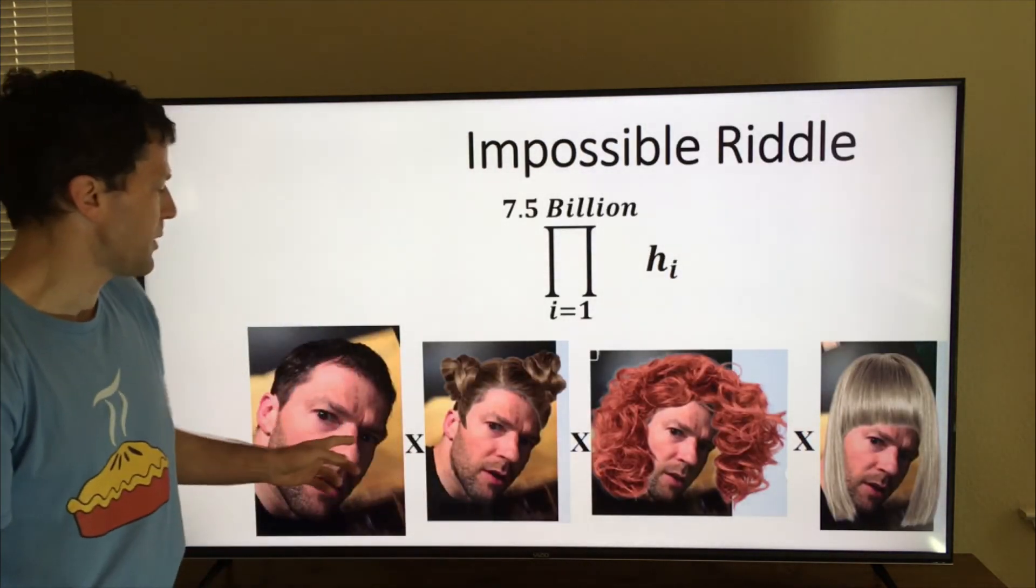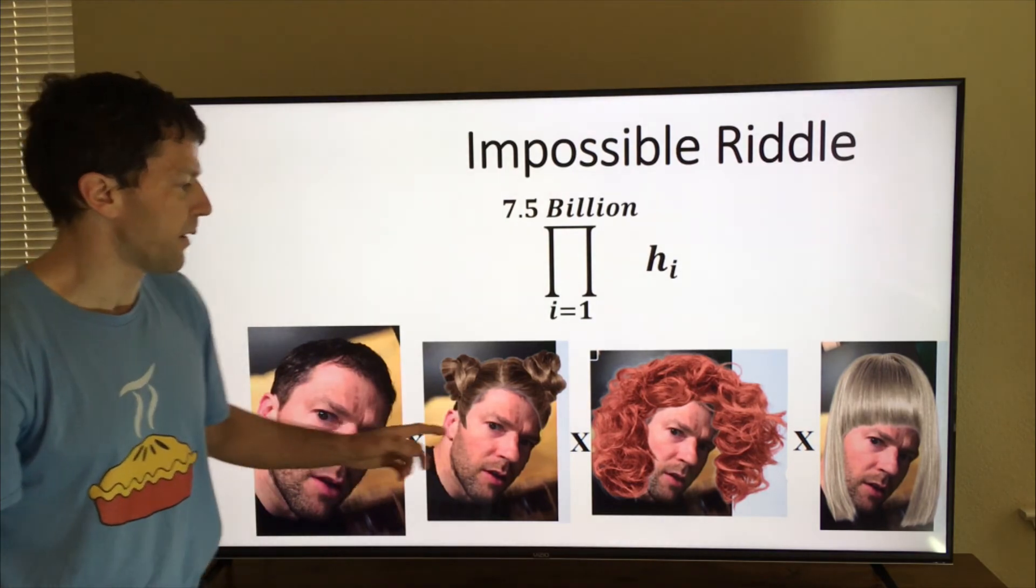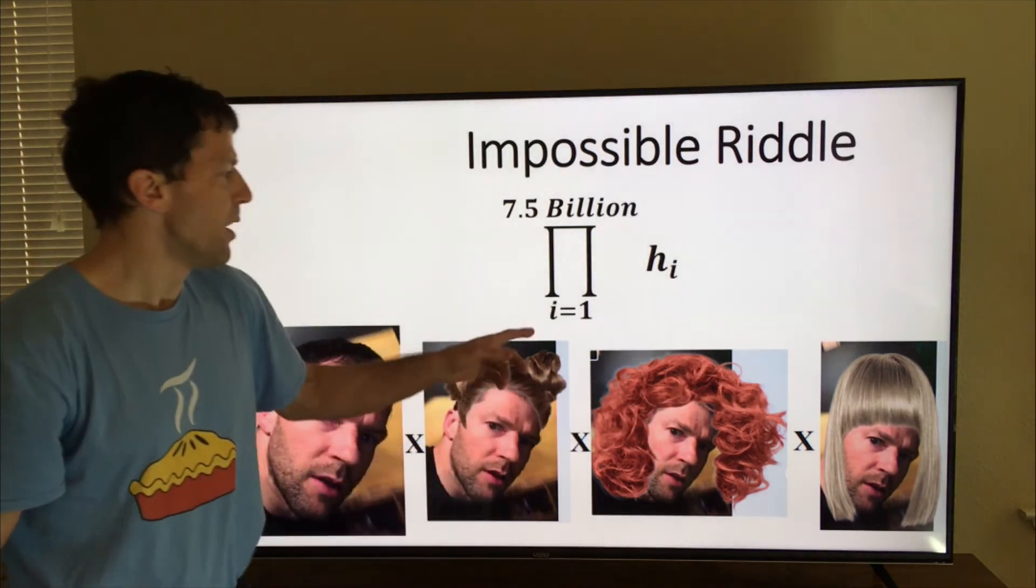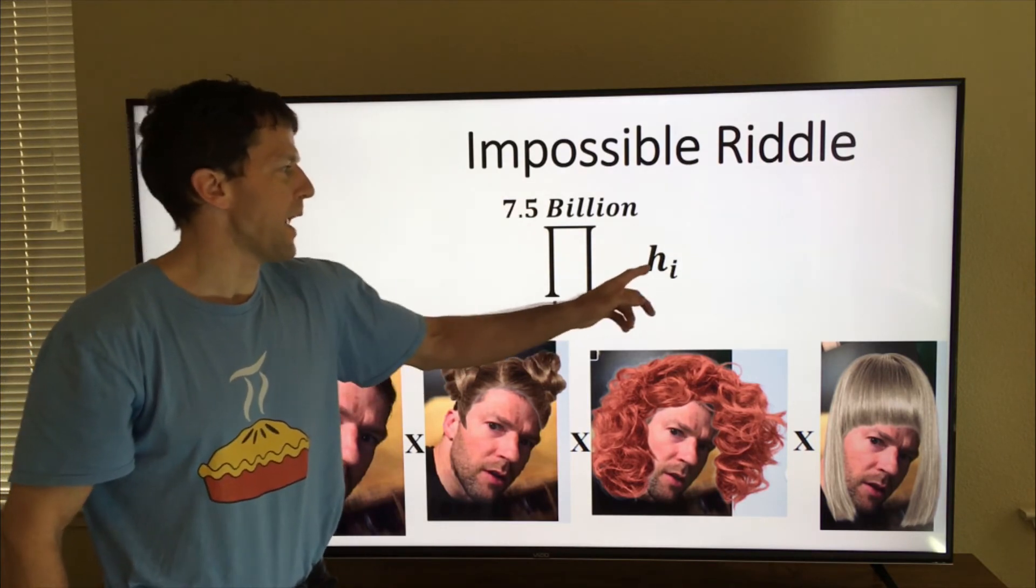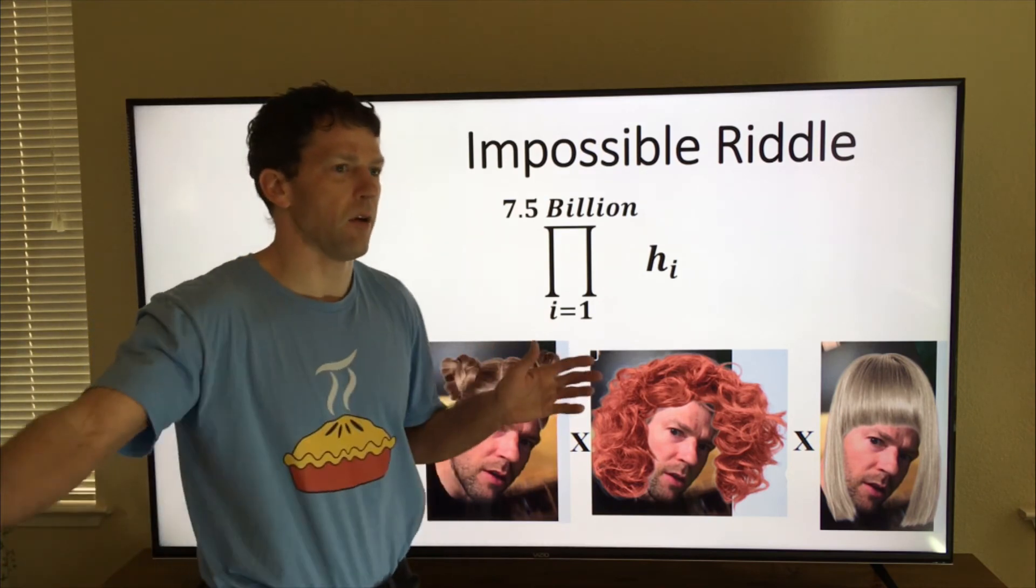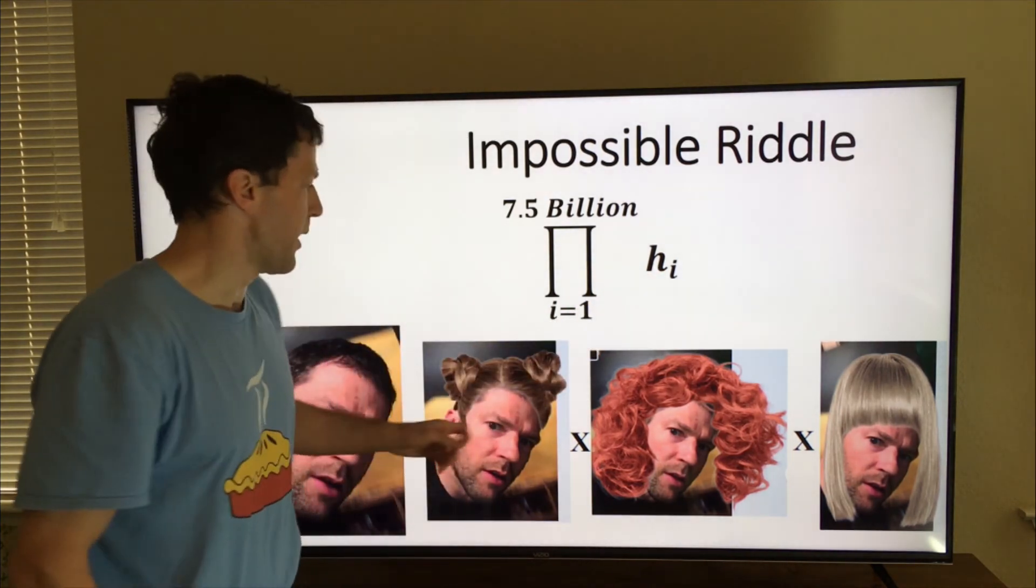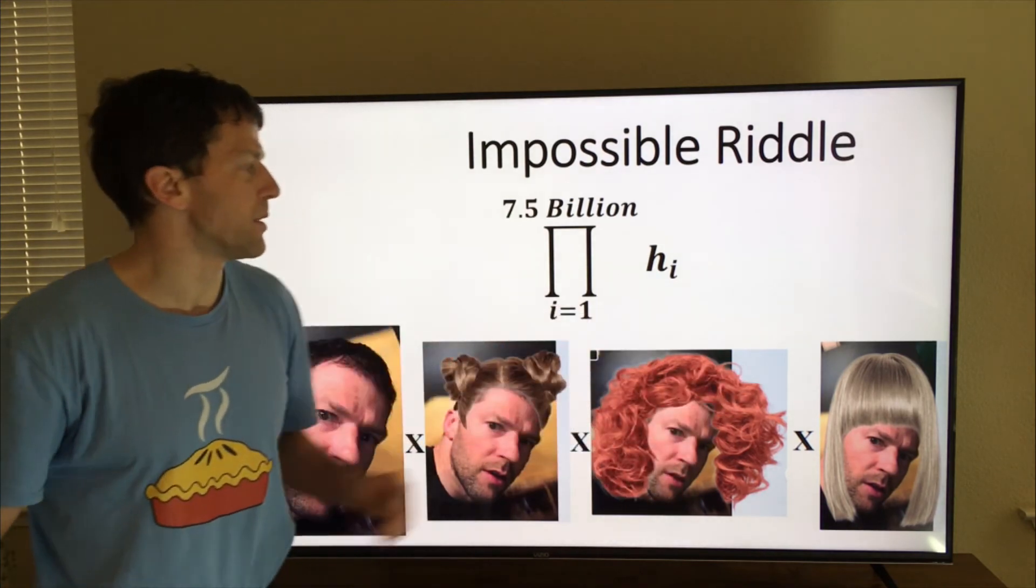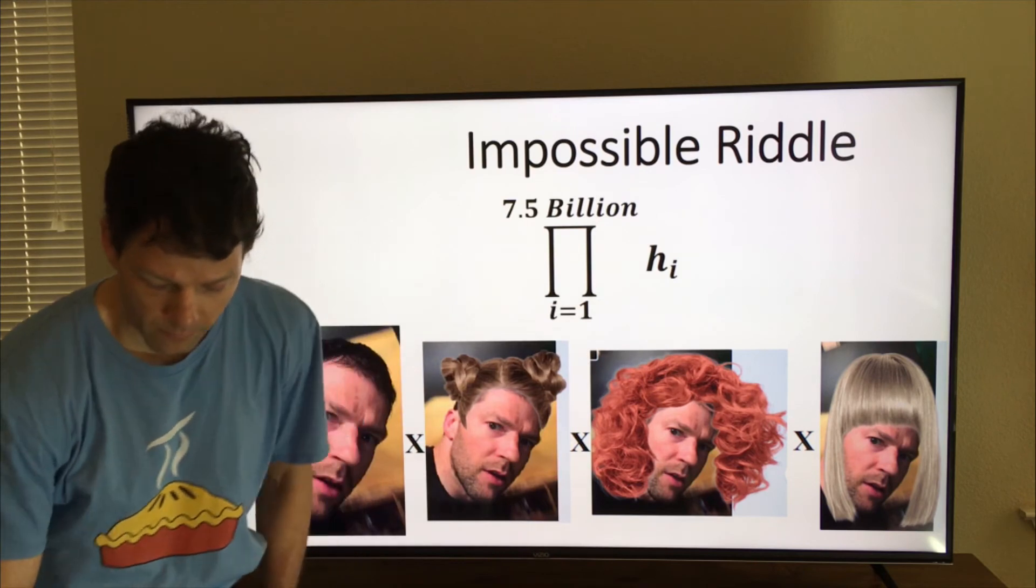And we can use that for example, in this impossible riddle video I made where you're multiplying the number of hairs on everybody's head. So say there's 7.5 billion people in the world and hi is the number of hair on the ith person's head. So we stand all these people in a row. And so we're just multiplying all the number of hairs on everybody's head. And what is that product? And you'll have to watch the video. I can show you how to get this answer exactly correct.